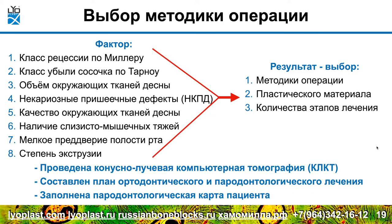Какие факторы также будут влиять на выбор методики? Это класс рецессии по Миллеру как основополагающий показатель, класс угла сосочка по Тарну, объем окружающих тканей десны, различные некариозные поражения, пришеечные дефекты, качество окружающих тканей десны, наличие слизисто-мышечных тяжей в этой зоне, мелкое преддверие полости рта, которое нужно формировать одномоментно, и степень экструзии зубов. Тогда мы определяем методику операции, выбор пластического материала и количество этапов лечения.